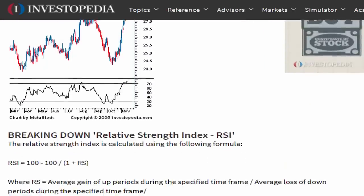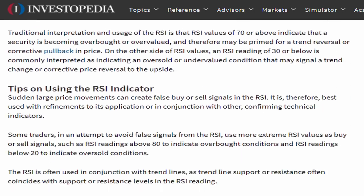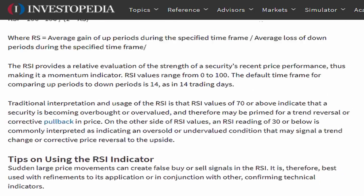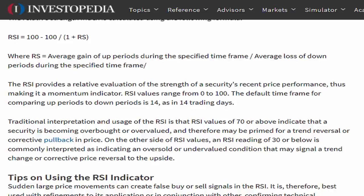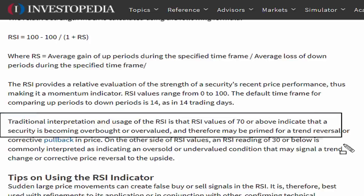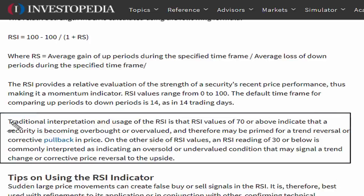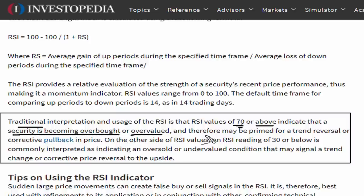Now if we take a look at this explanation for what the RSI is, I want to capture what they say here, which is that the traditional interpretation of the usage of the RSI is that RSI values above 70 indicate that a security is becoming overbought or overvalued and therefore may be primed for a trend reversal.